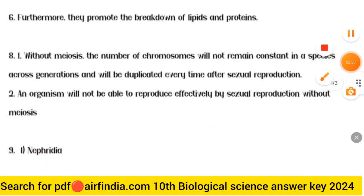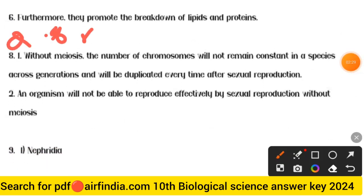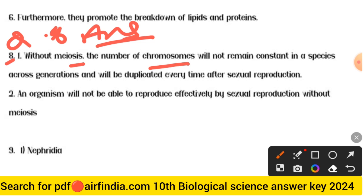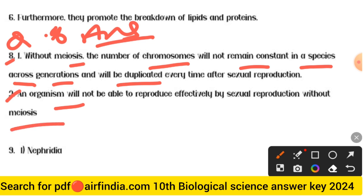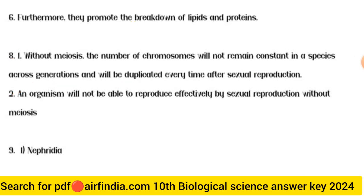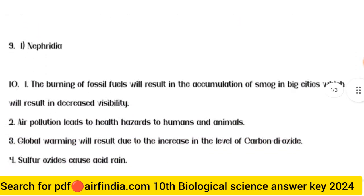Question 8 answer: Without meiosis, the number of chromosomes will not remain constant in a species across generations and will be duplicated every time after sexual reproduction. Second point — an organism will not be able to reproduce effectively by sexual reproduction without meiosis.